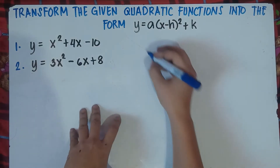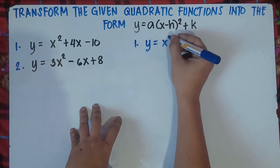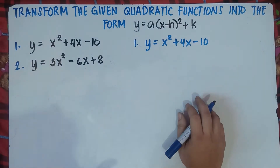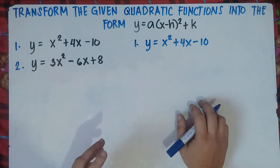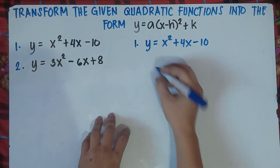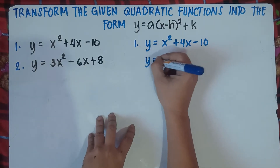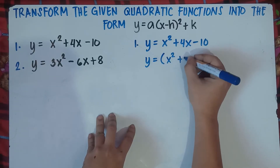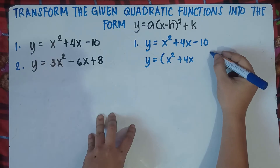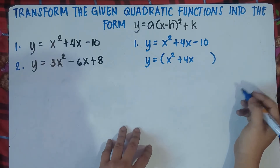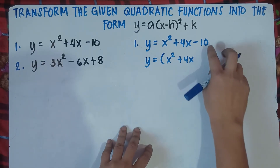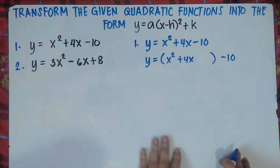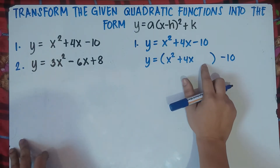Let's start with number 1: y equals x squared plus 4x minus 10. The first thing to do is separate the terms that contain the x values. So you write y equals, put parenthesis, x squared plus 4x, then put a space because we will do the completing the square. Put negative 10 on the last part.